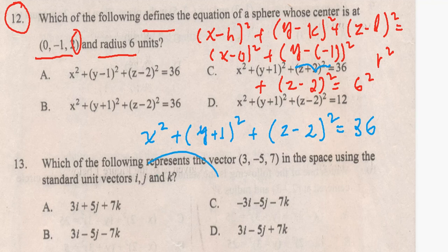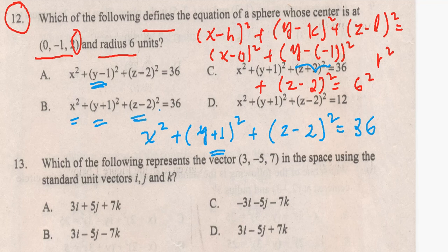So the equation of the sphere is: x squared plus y plus one, the whole squared, plus z minus two, the whole squared, is equal to six squared, which is 36. Therefore our answer is choice B.